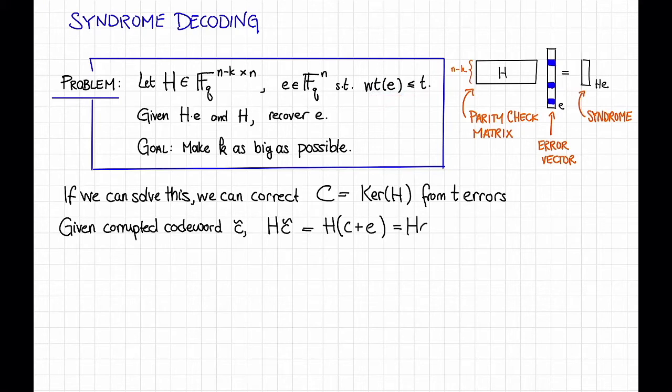Which is equal to H times C plus H times E, which is just equal to the syndrome H times E, since C is in the code, so this is zero. So if we can solve this problem, then from this syndrome,